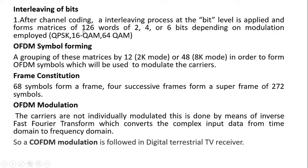After channel coding, a bit-level interleaving process is performed, forming matrices of 126 words. Depending on the modulation chosen, a certain number of bits are selected, grouped, and formed into symbols. In 2K mode, the bits are grouped by 12; in 8K mode, by 48. Then 68 symbols constitute a frame, and 4 frames make a super frame. OFDM modulation follows, where the multiple carriers are not individually modulated but modulated using the inverse FFT, which transforms the input data from time domain to frequency domain.